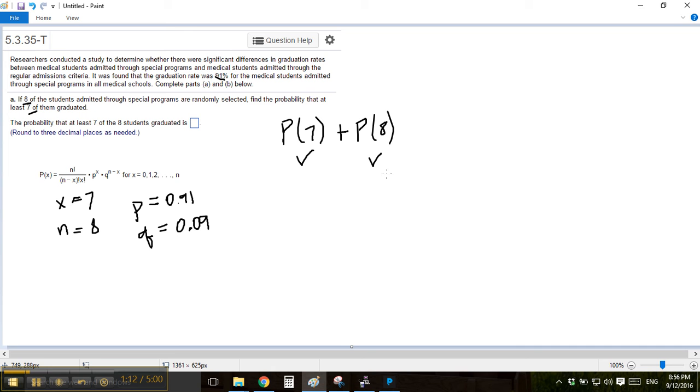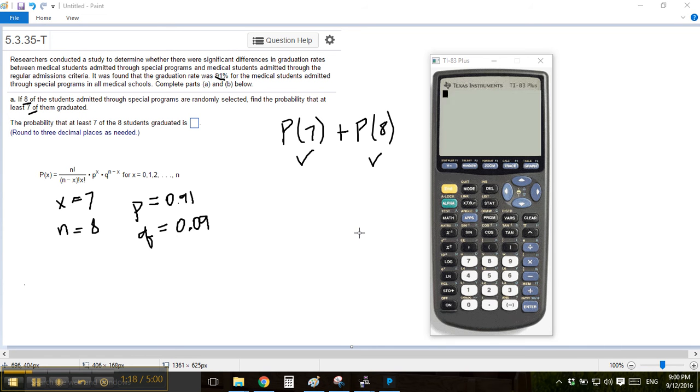So now the faster way is with the TI calculator. So let me pull that out. So with the calculator here, here's what we'll do. We'll do 2nd and you go to VARS, and so above VARS is distribution, and we're going to do our binomial probability distribution.